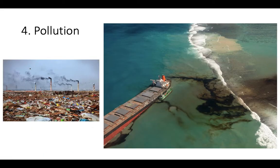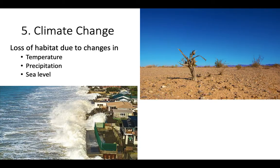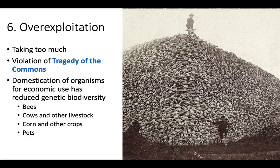Additionally, pollution — we just spent two units talking about air, land, and sea pollution. All of those things can damage ecosystems while also killing animals and decreasing biodiversity. Climate change as well: changes in temperature, precipitation, and sea level can reduce the amount of available habitat for organisms.